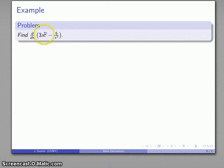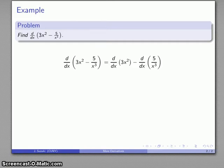So I can take this function here, break it into two parts, 3x squared and 5 over x cubed, and then I can differentiate each part separately. So here goes nothing, the derivative of the difference is the same as the difference of the two derivatives, and let's take a look at each part separately.